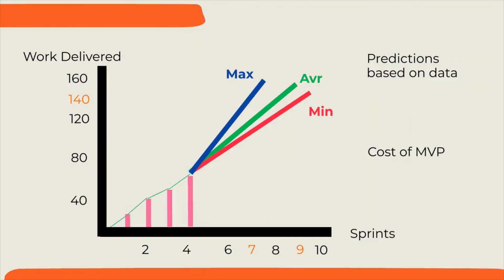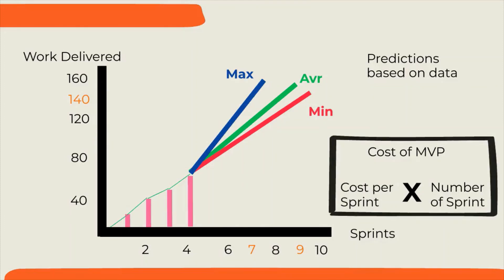For example, as shown in scope-driven planning, we see the MVP can be delivered between sprint 7 and 9. Knowing the number of people working in the team, we can have the cost of the sprints. We simply multiply the cost of sprint by number of sprints required to deliver MVP to have the cost of the MVP.